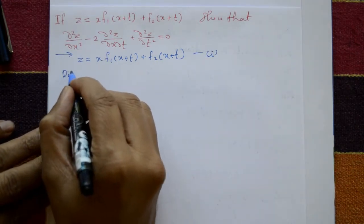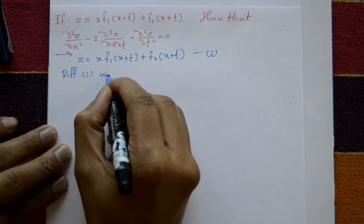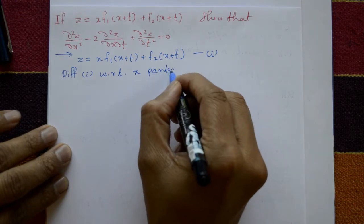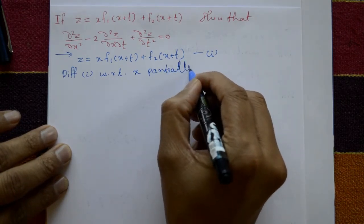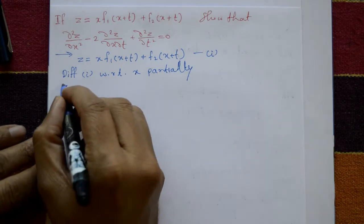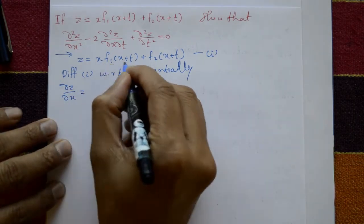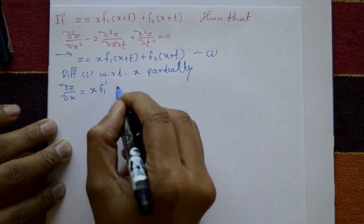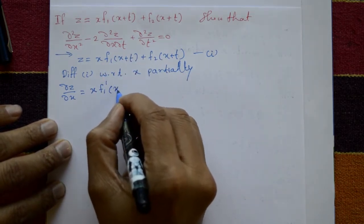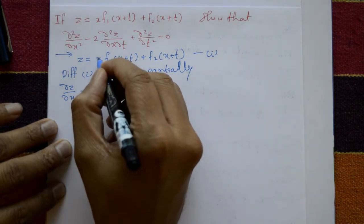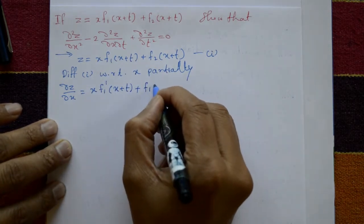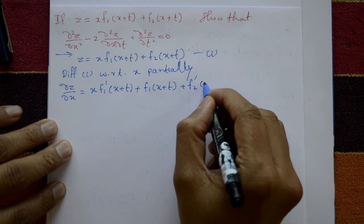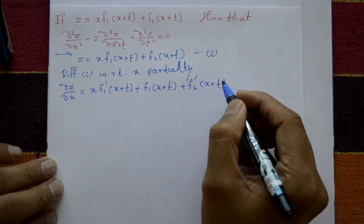Now differentiate equation number one — that is, z — with respect to x partially, treating t as a constant. So ∂z/∂x equals: the first term is a product, so using the product rule: x times f1 dash of (x+t), plus f1(x+t) (from differentiating x to get 1), plus the second term gives f2 dash of (x+t).